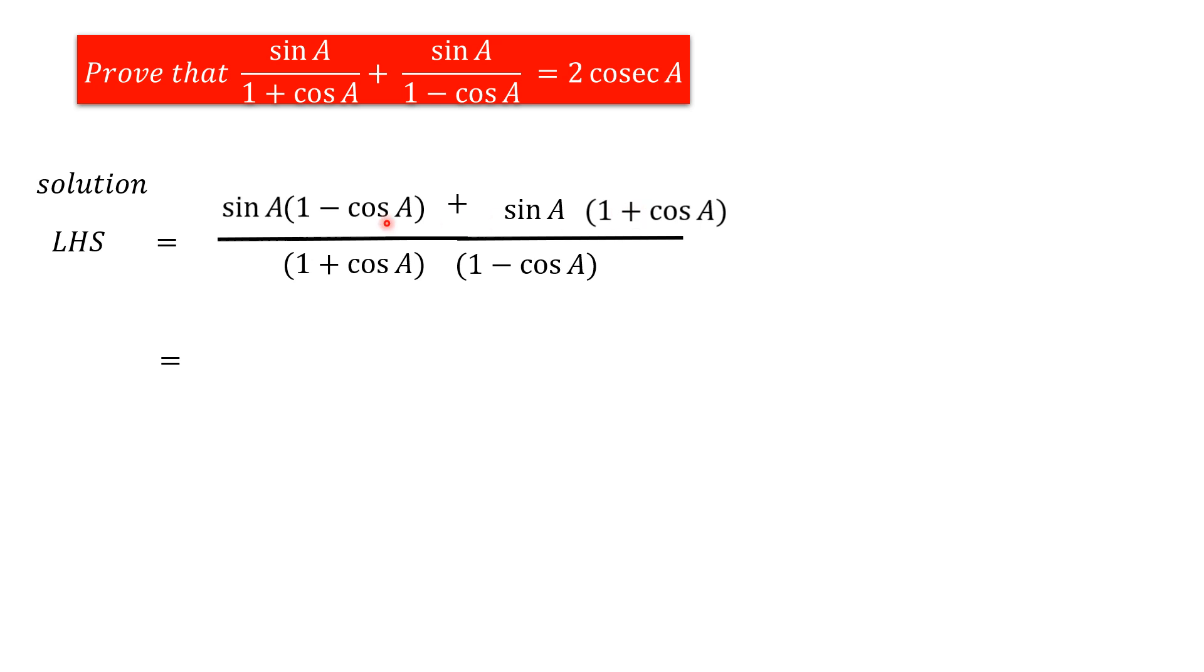Now, we have to multiply these values on the numerator. So, sin A into 1 gives sin A minus sin A into cos A, plus sin A into 1 gives sin A plus sin A cos A. This minus sin A cos A plus sin A cos A, we can cancel out. So, we get sin A plus sin A equals 2 sin A.